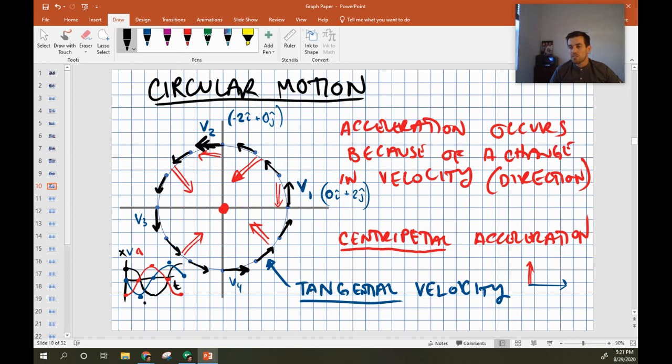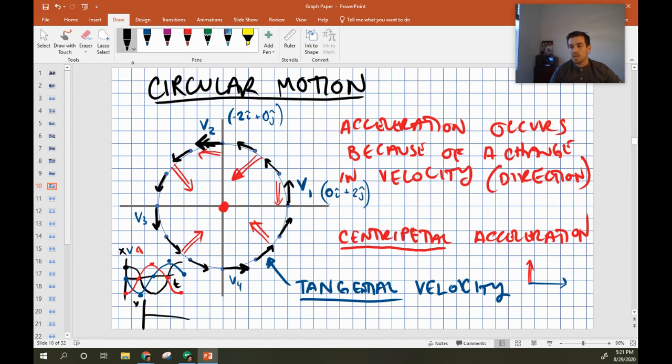But the thing to point out is if I want to find the tangential velocity from this graph, the best place to look would be to try and get the approximate slope right at that steepest position. And if I used that, I could figure it out.